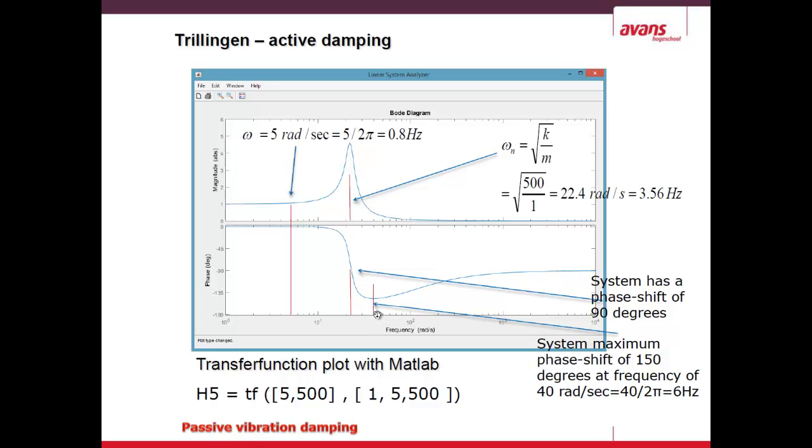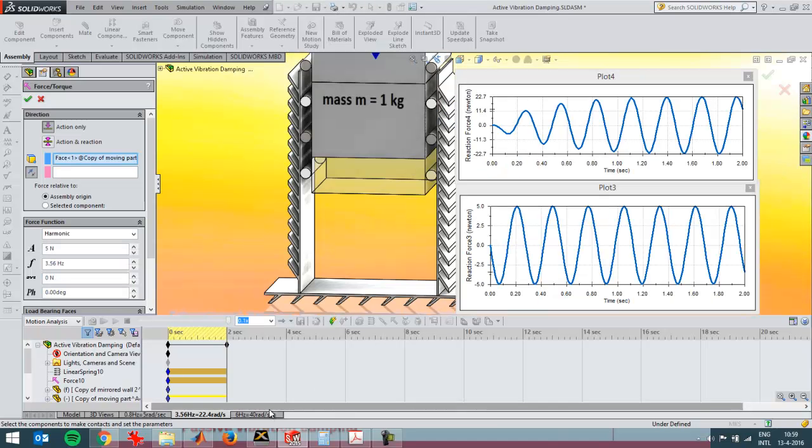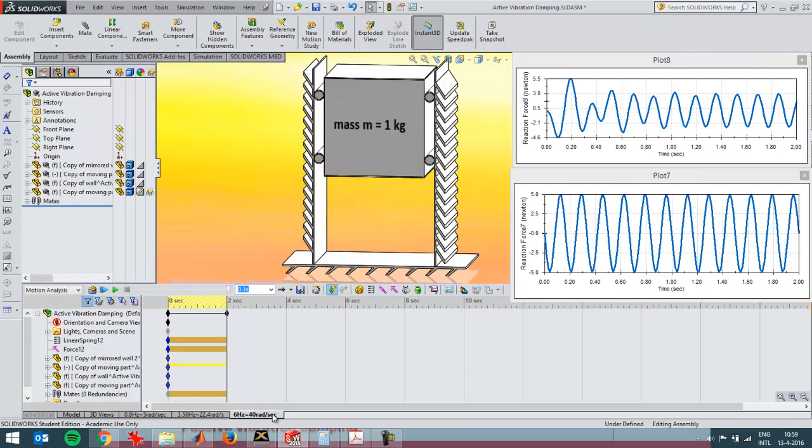In that case the maximum phase shift is reached. I've got a plot of that as well here. There's this motion analysis. The frequency is higher again, so there's more fluctuations over here, which means it's a bit harder to actually read those graphs.